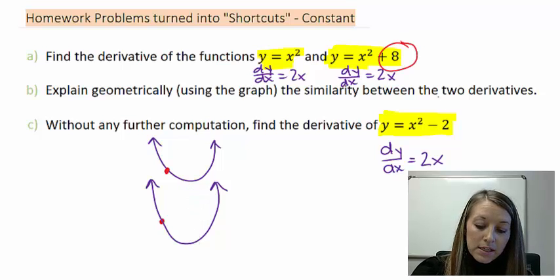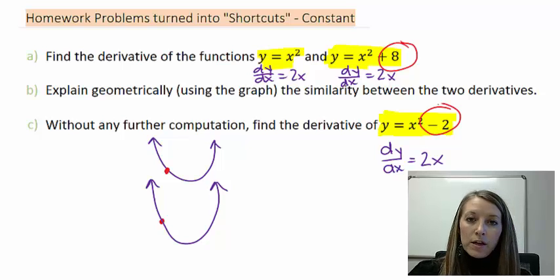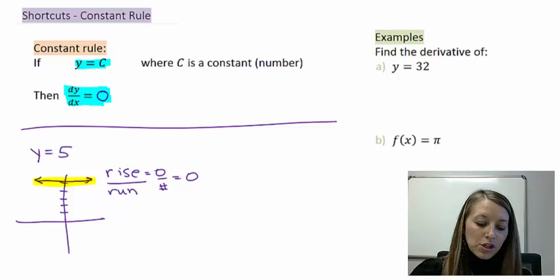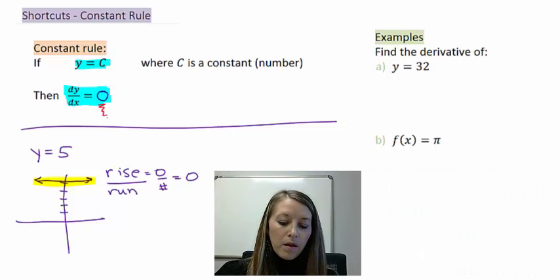So these constants added to my equations here, that's just the shift. And we saw that the derivative of those pieces had no effect on our graph. So that just reinforces that the derivative of any constant has no implication. Therefore, the derivative is zero.